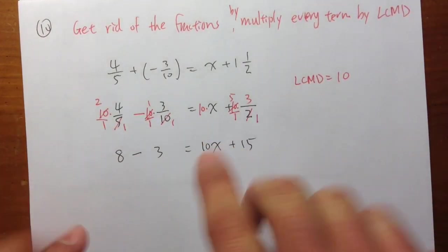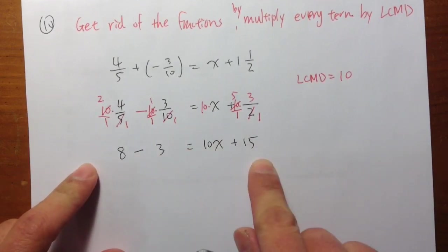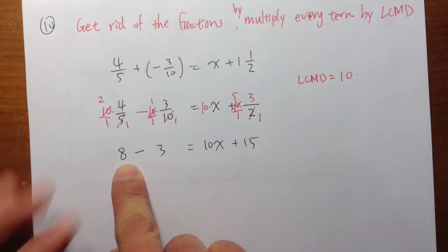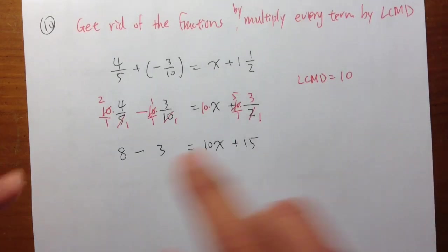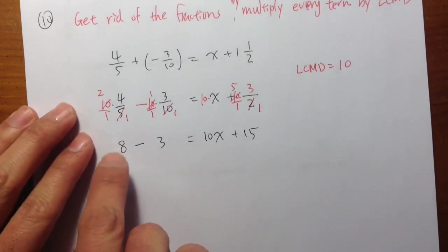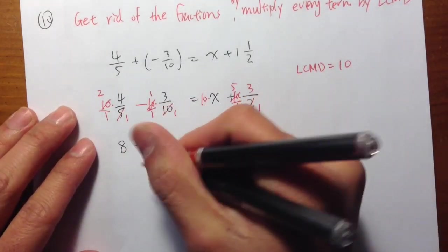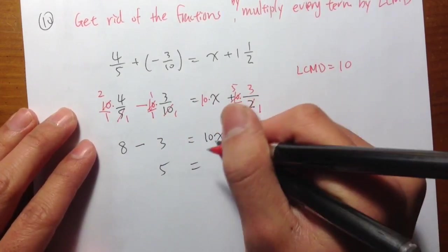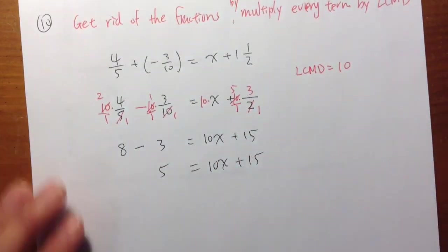And after all the hard work, we have a much nicer equation. 8 minus 3 is equal to 5, by the way. So 5 equals to 10x plus 15.